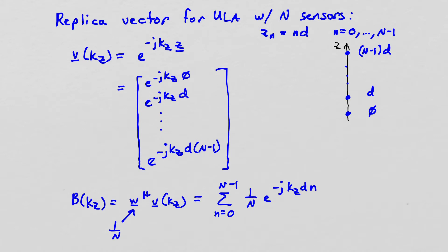So now all we have to do is compute the inner product of w hermitian v of kz. And remember, all of the w's are equal to 1 over n because we had that uniform weighting. So that inner product is simply going to be the sum from n equals 0 to n minus 1 of 1 over n e to the minus j kz times little n, where little n is the sensor index that goes from 0 to n minus 1.